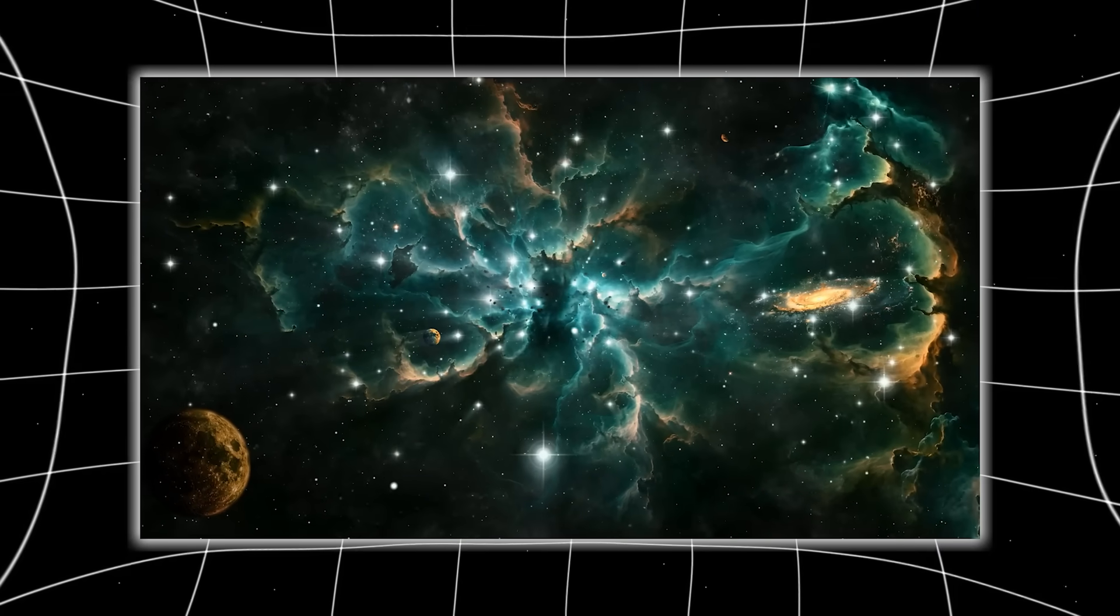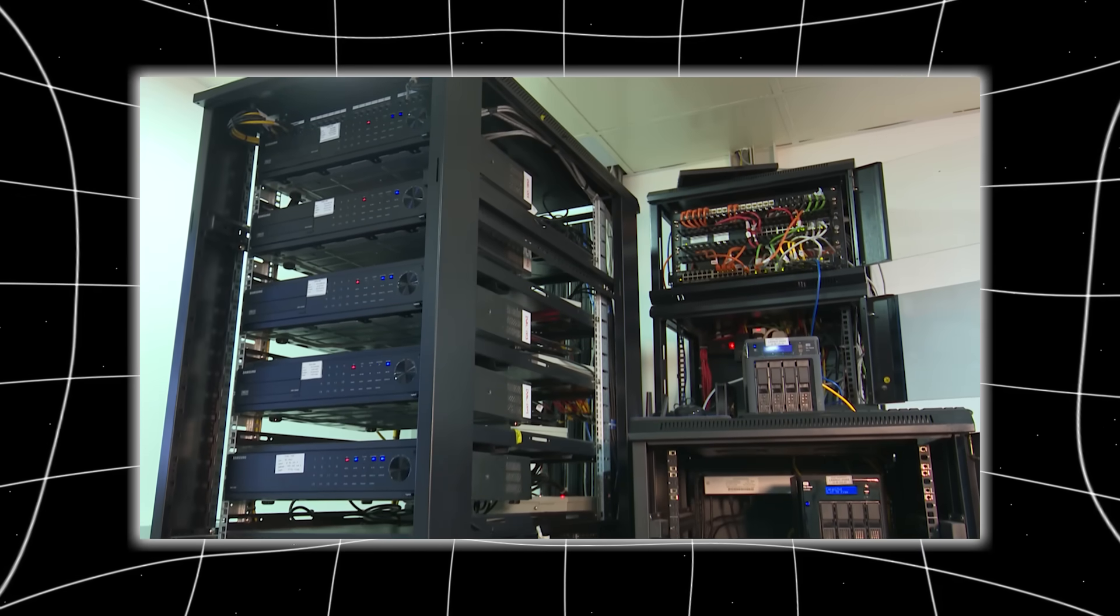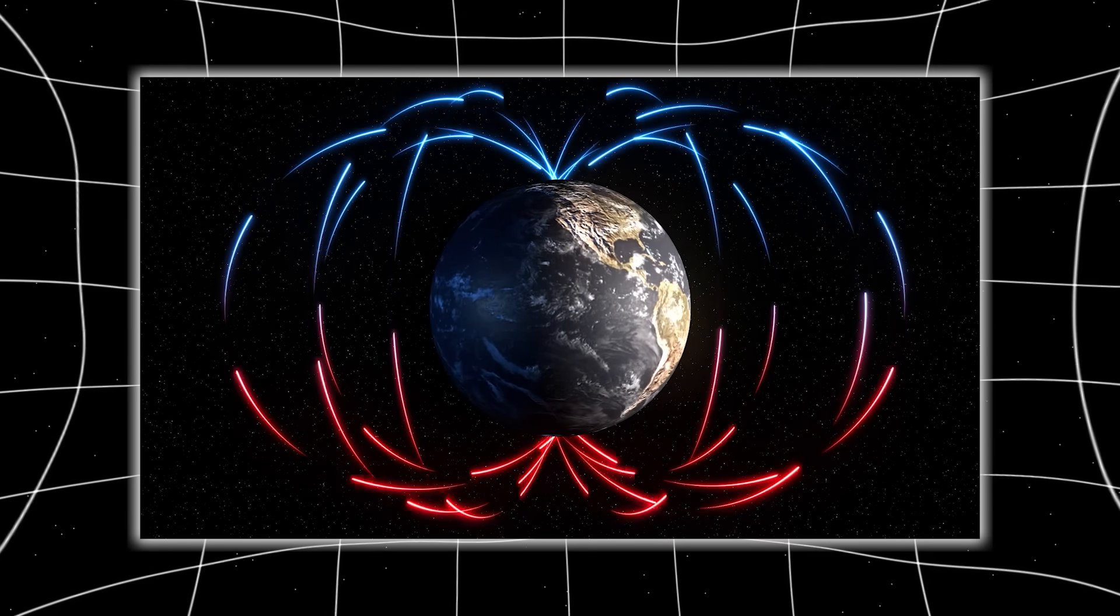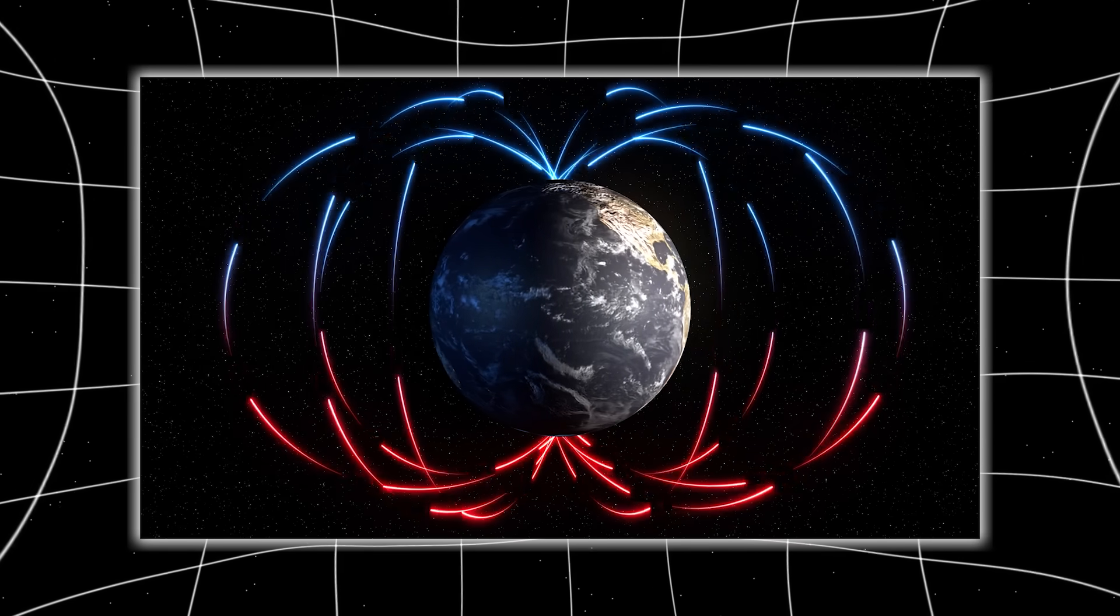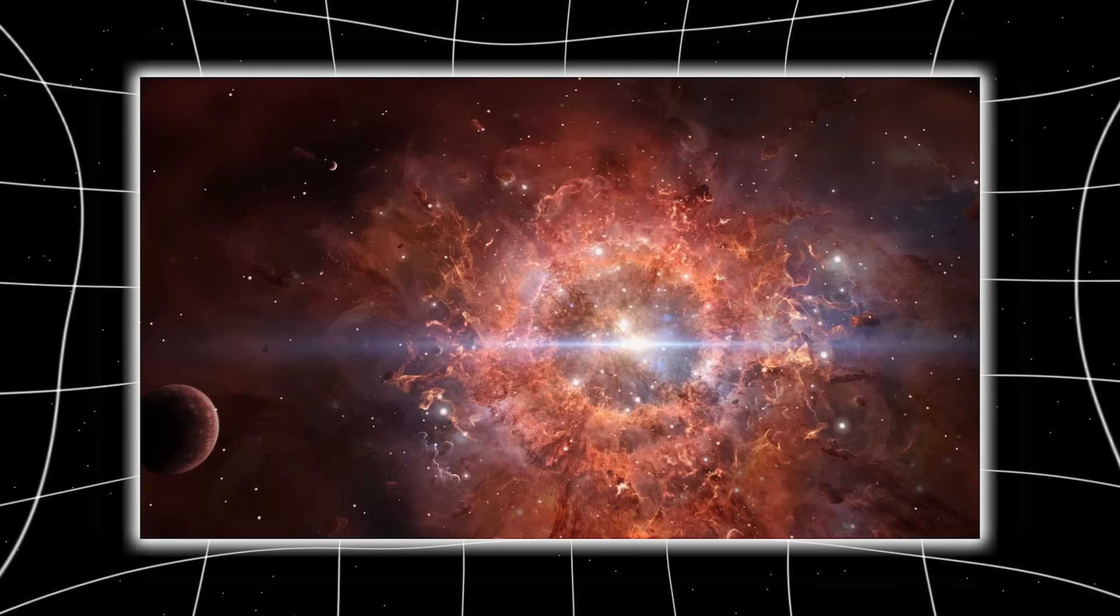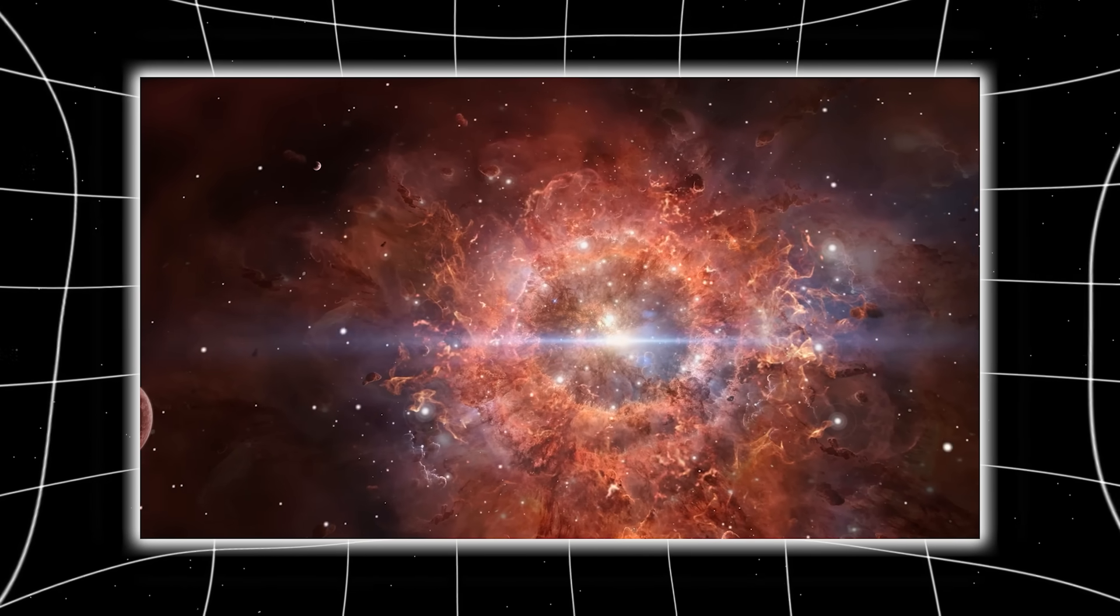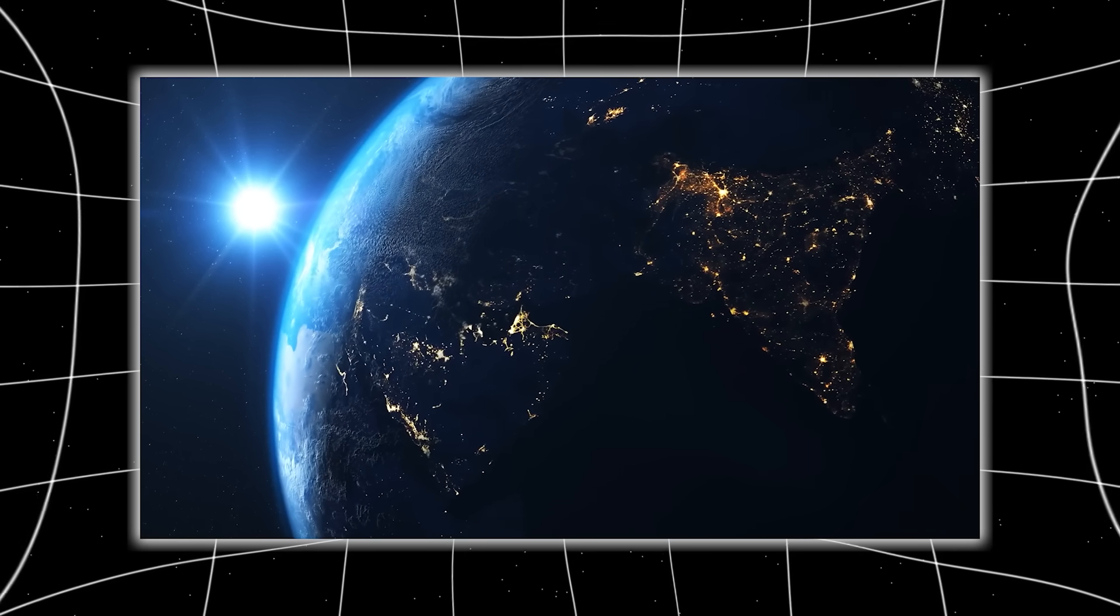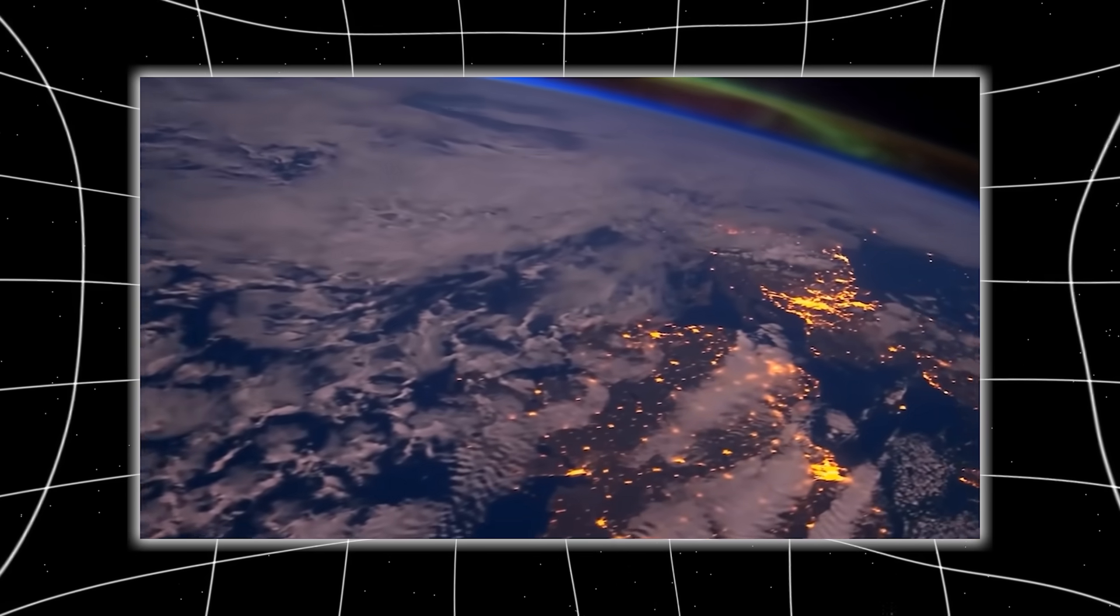Then, another revelation hit. As the data spread across institutions, analysts noticed that Earth's own magnetic field had fluctuated precisely 12 seconds after the beam ended. The same pulse, the same interval, echoed through our atmosphere, briefly altering the ionospheric resonance, the Schumann frequency, by 0.02 hertz.